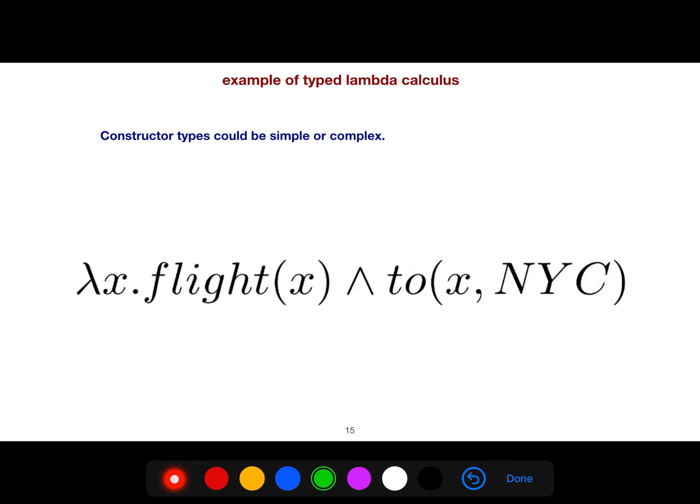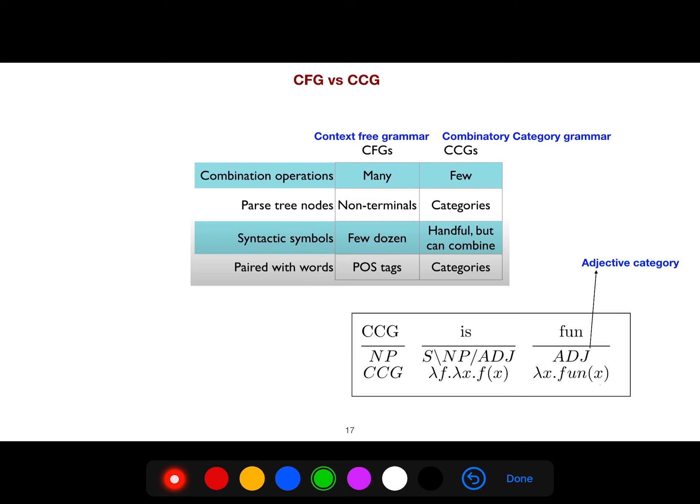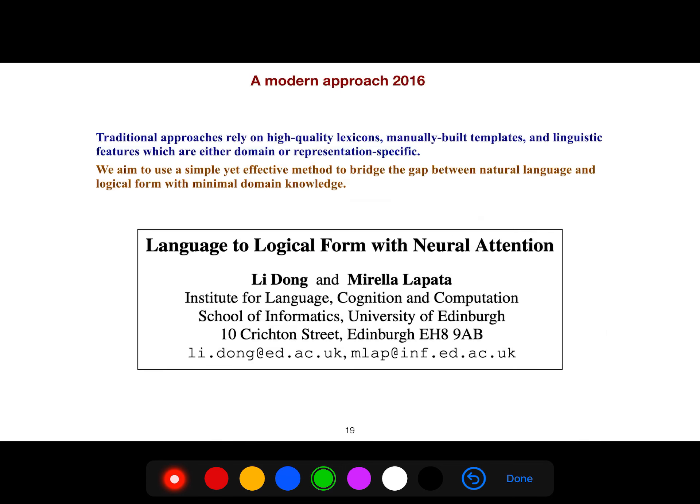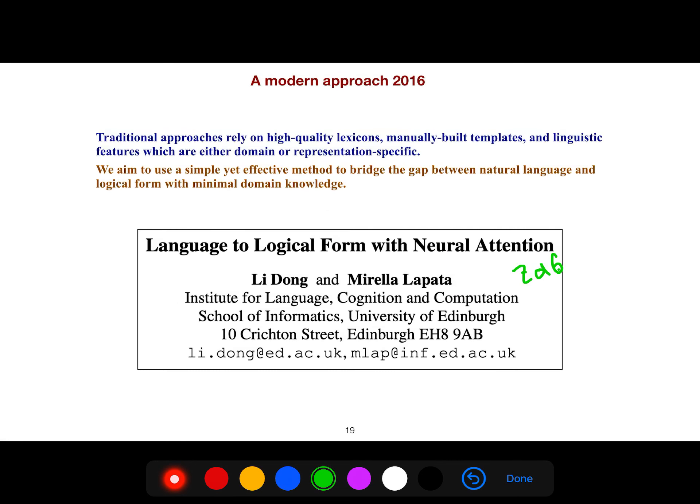We have examples of typed lambda calculus. Context-free grammar is different from combinatory categorial grammar. I want to skip this. A modern approach is the 2016 article From Language to Logical Form with Neural Attention. Traditional approaches rely on high-quality lexicons, manually built templates, and linguistic features which are either domain or representation specific. We aim to use a simple yet effective method to bridge the gap between natural language and logical form with minimal domain knowledge. It's very solid because it doesn't use anything. It just uses neural networks and attention.